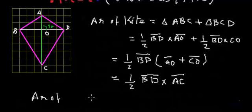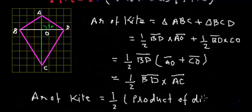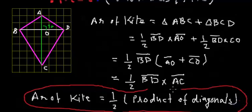So the area of the kite is also half of the product of both diagonals. This completes the proof of the formula for the area of a kite.